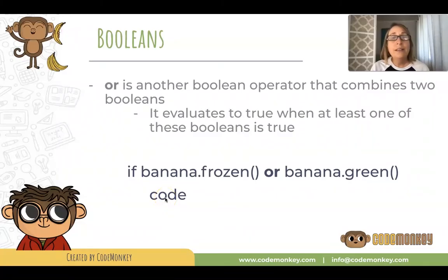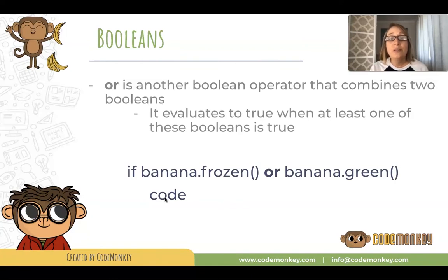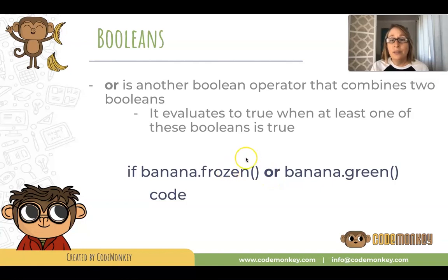OR is another Boolean operator that combines two Booleans. It evaluates to true when at least one of these Booleans is true. For example: if banana frozen or banana green. Because we're using the OR Boolean operator, only one of these needs to be true for the indented code to run.